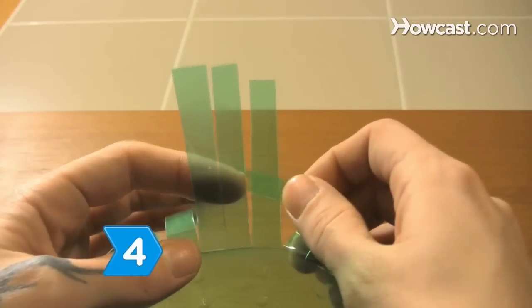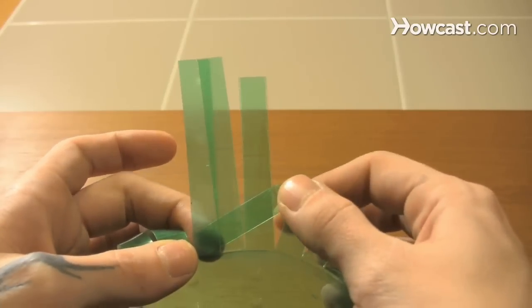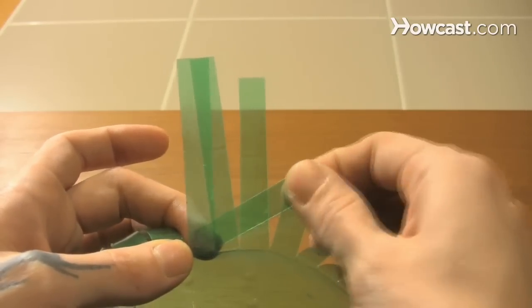Step 4. Weave one strip over the one next to it and then under the following two, creasing it so that its tip is at the base of the third strip.